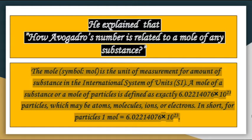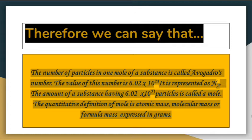One mole is equal to 6.022 × 10²³ particles. The number of particles in one mole of a substance is called Avogadro's number. The value of this number is 6.022 × 10²³, and it is represented as Nₐ. The amount of substance having 6.022 × 10²³ particles is called a mole — which is the atomic mass, molecular mass, or formula mass expressed in grams.